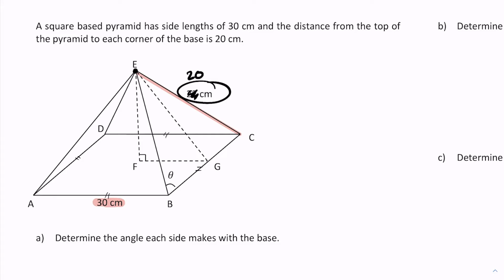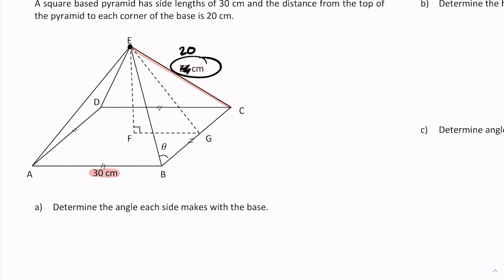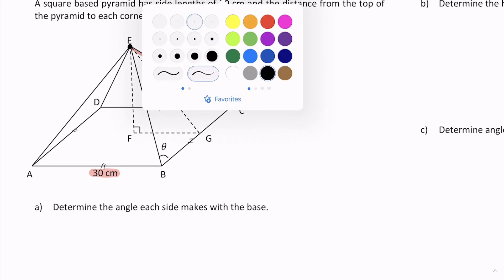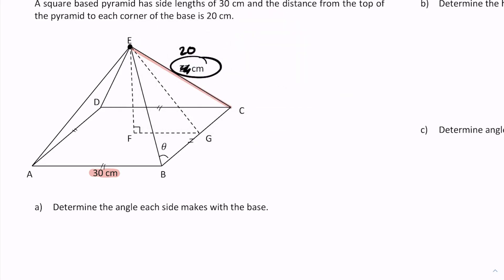The first part of this question says determine the angle each side makes with the base. What they're saying here is if you see this triangle here on the inside, let me outline it for you. This is like a triangle—that's the height from the top to the bottom—it's a perpendicular. I have this over here and then I have this side over here.